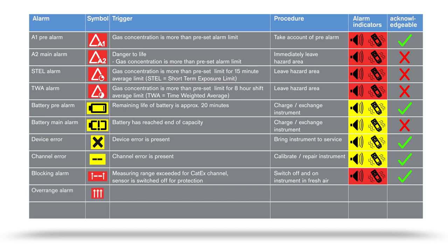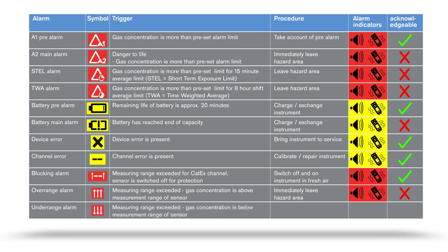An overrange alarm is triggered when the measuring range has been exceeded. The ambient air contains concentrations that exceed the measuring range of the sensor concerned. Leave the hazard area immediately.